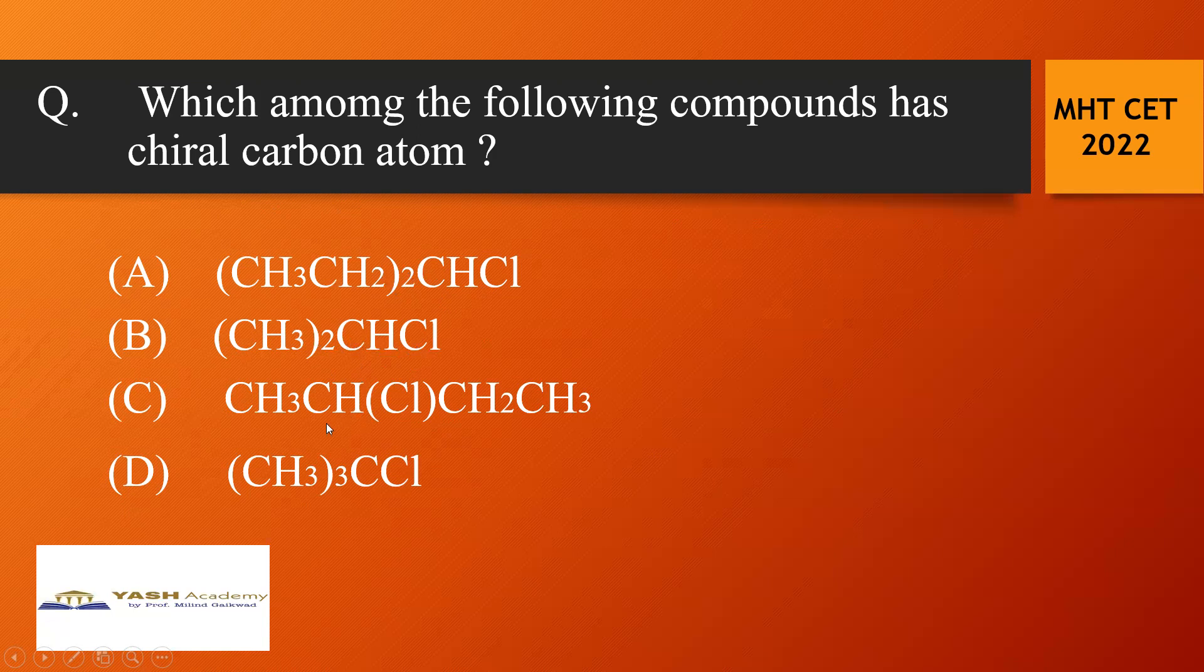If you observe the C option, in C option if you consider this carbon as a chiral carbon atom it is attached to hydrogen Cl one methyl and one ethyl. So this is the carbon which is attached to four different atoms or groups. So C is the correct answer option of this question.